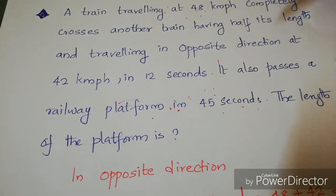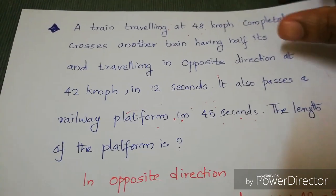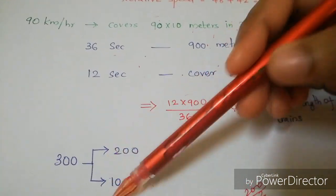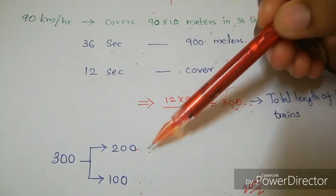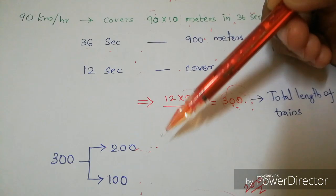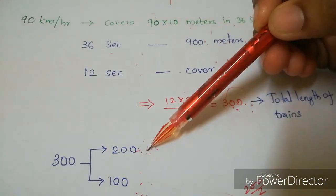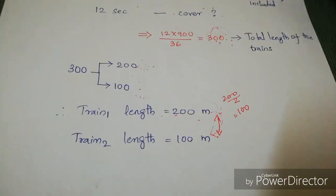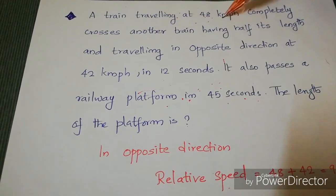One train's length is half the other's. Let the first train = 200 meters and the second = 100 meters (half of 200). Then 200 + 100 = 300, which matches. So the length of the first train is 200 meters.